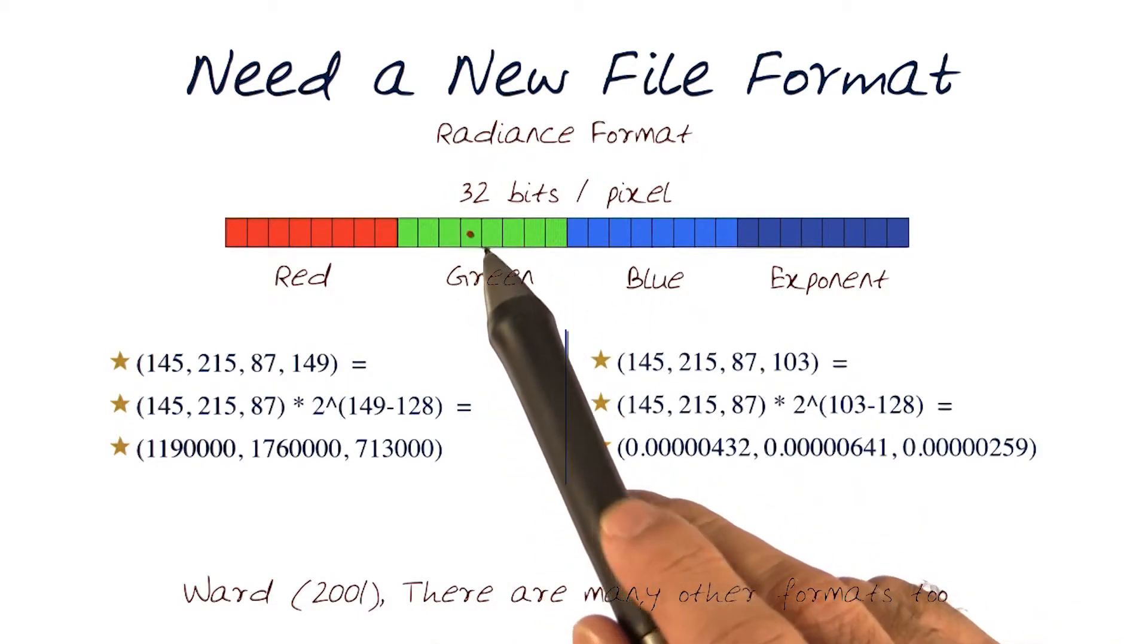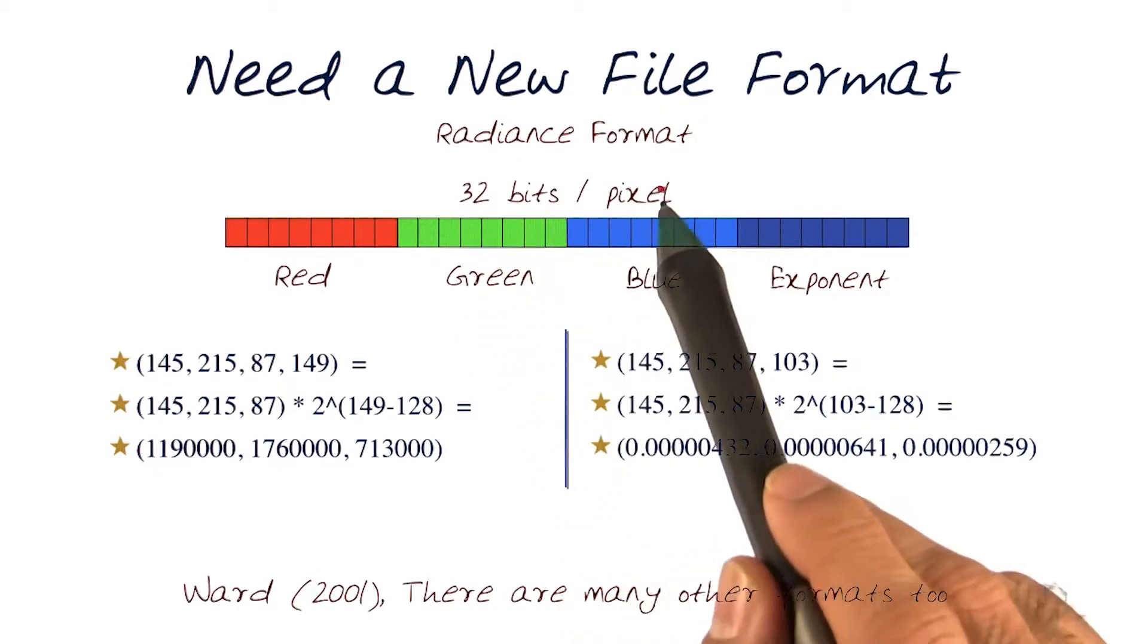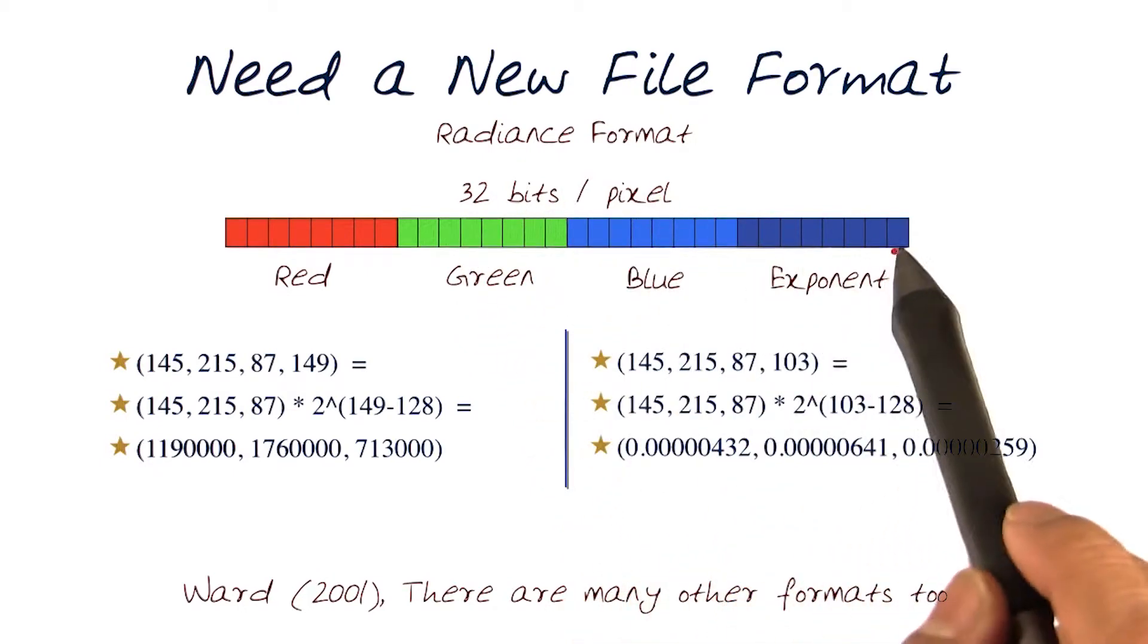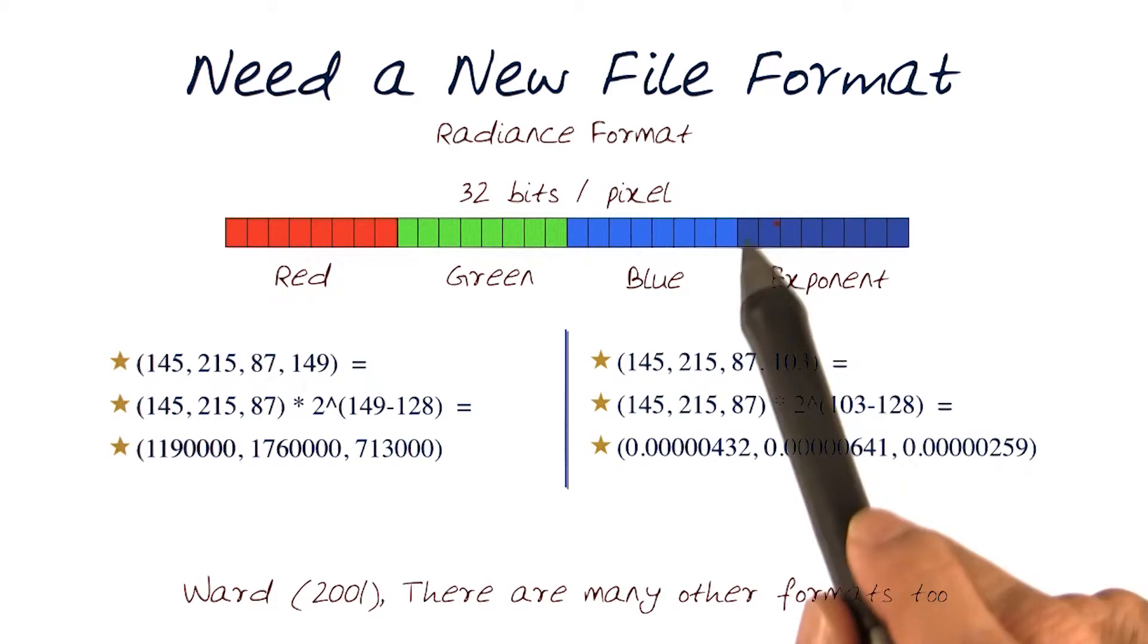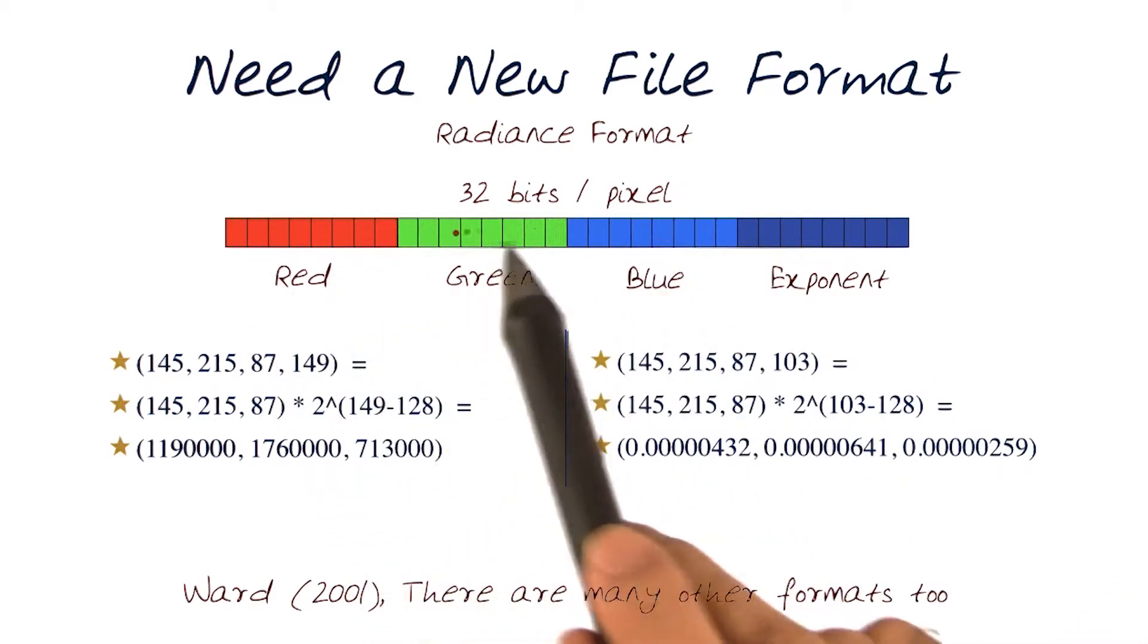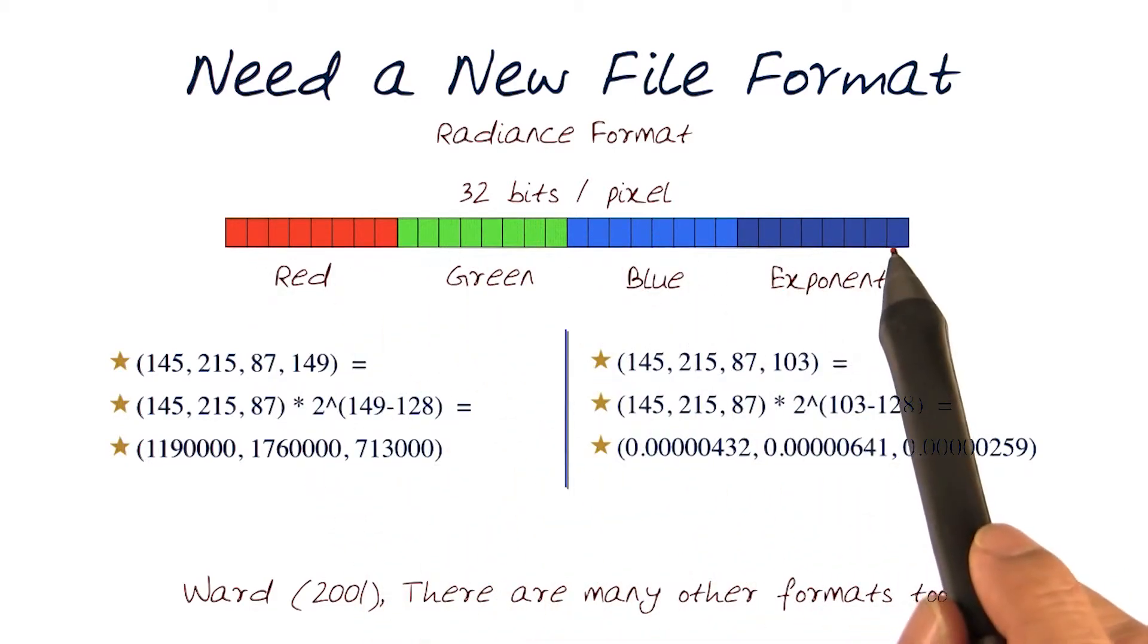Well, now we need a newer form of an image, 32 bits per pixel. Because now we want to actually create 8 bits of additional information. This was 24 bits, 8 bits per color. So we're going to add an exponent.